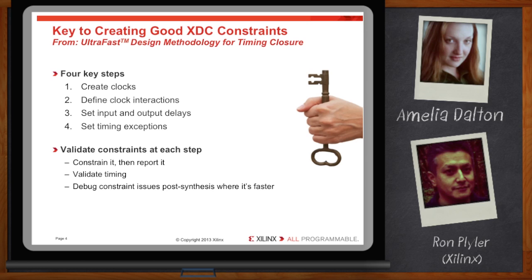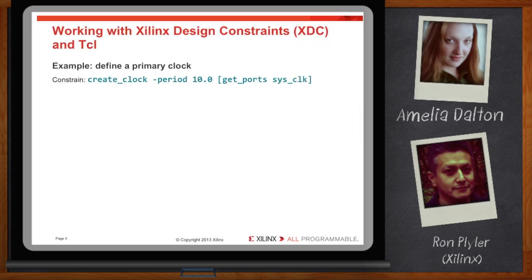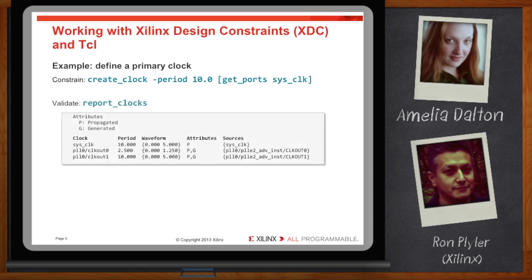Let's take a look at a simple example of the first step: creating clocks. To do this, we use the XDC constraint create clock, give the clock period, and attach it to the input port called sysclock. One of the advantages of having this interactive timing engine in Vovato is that we can get instant feedback on the constraints. The Tickle command report clocks will report the clock that was just created along with the derived generated clocks. We can see sysclock goes into a PLL, which drives out the deskewed version along with the 4x version. It's a useful way to validate constraints.